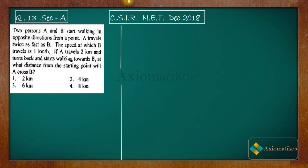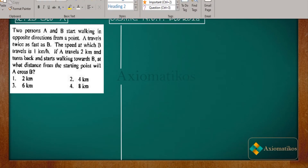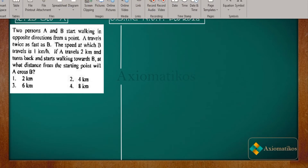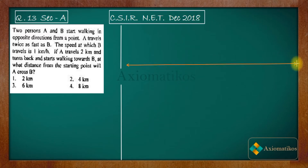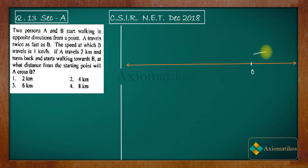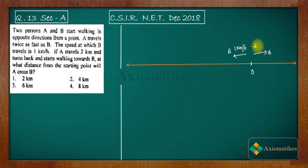Now I will try to represent everything in a diagram. So let us say this is the road on which A and B are traveling, and this is the starting point for both of them. A travels in one direction and B travels in the opposite direction. Speed of B is one kilometer per hour and speed of A is two kilometers per hour.